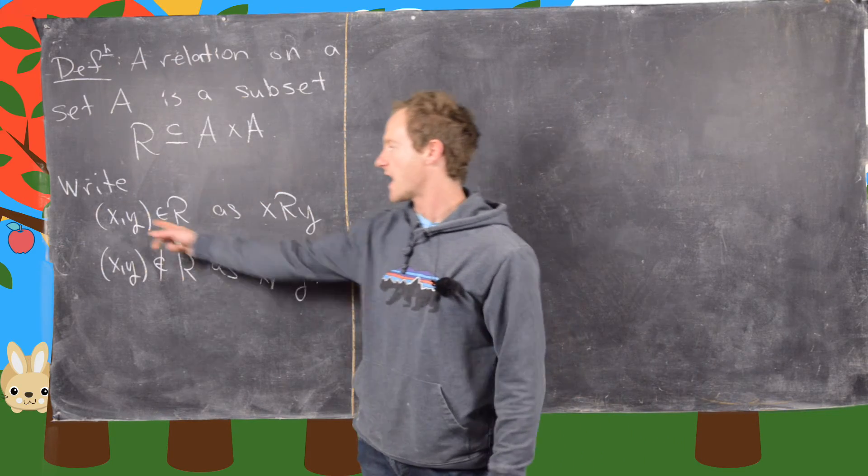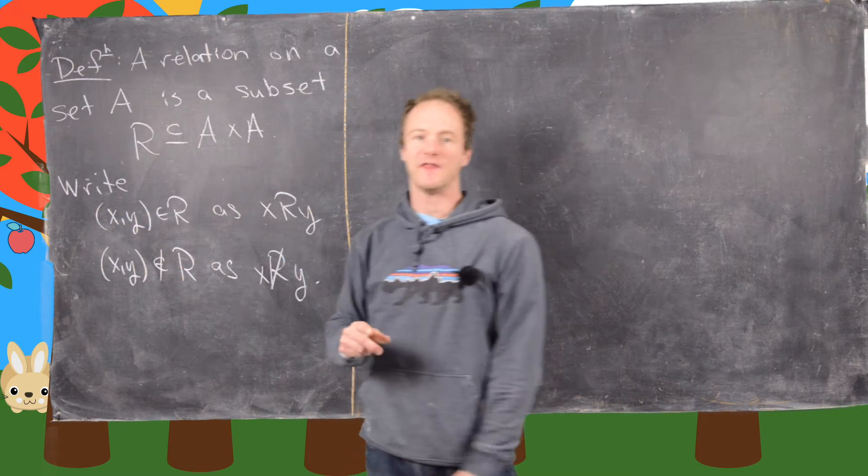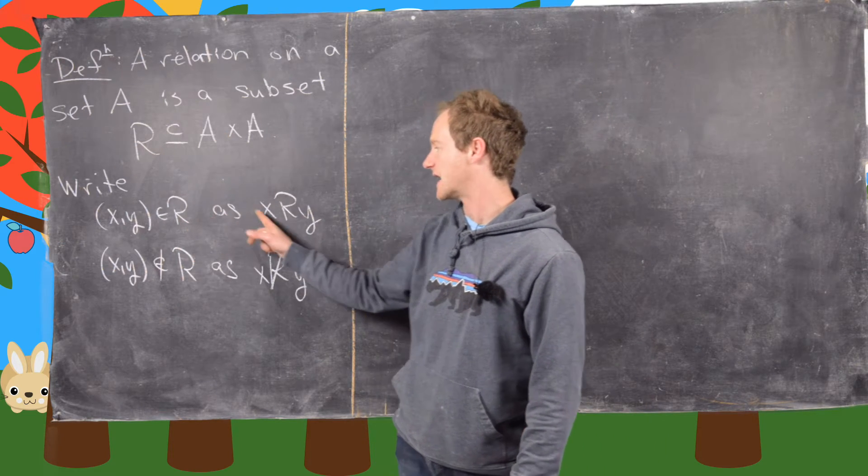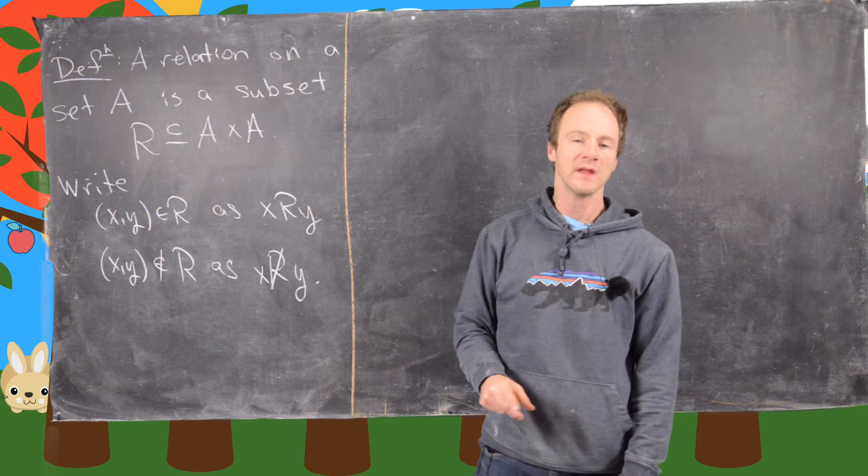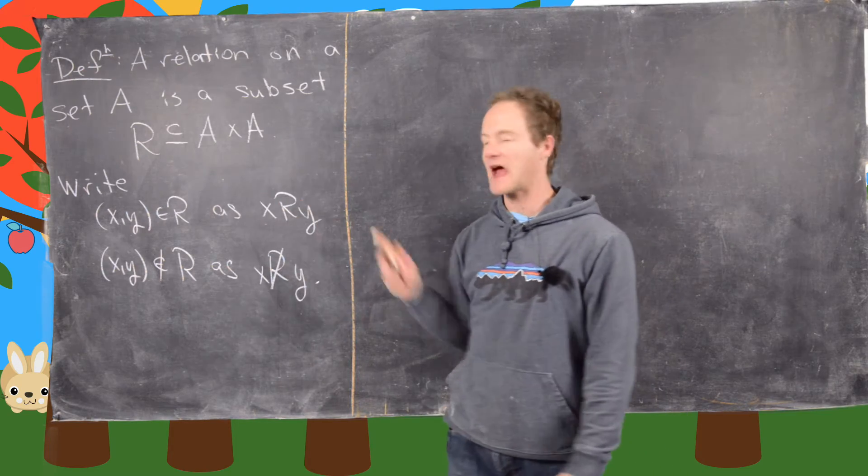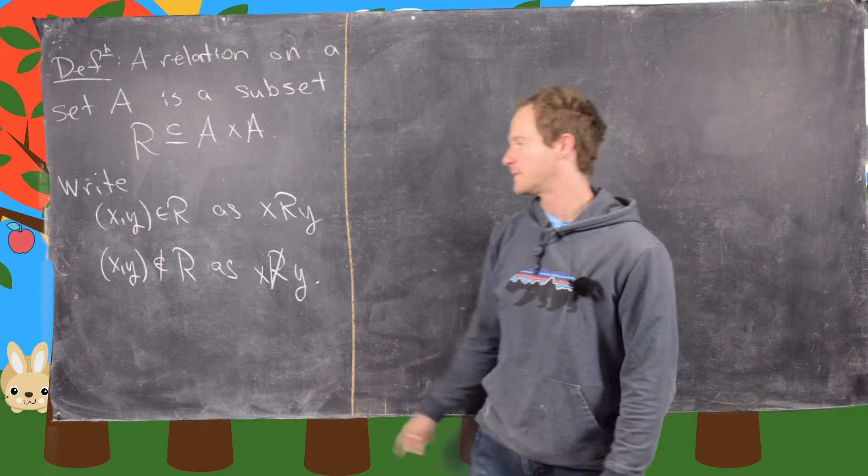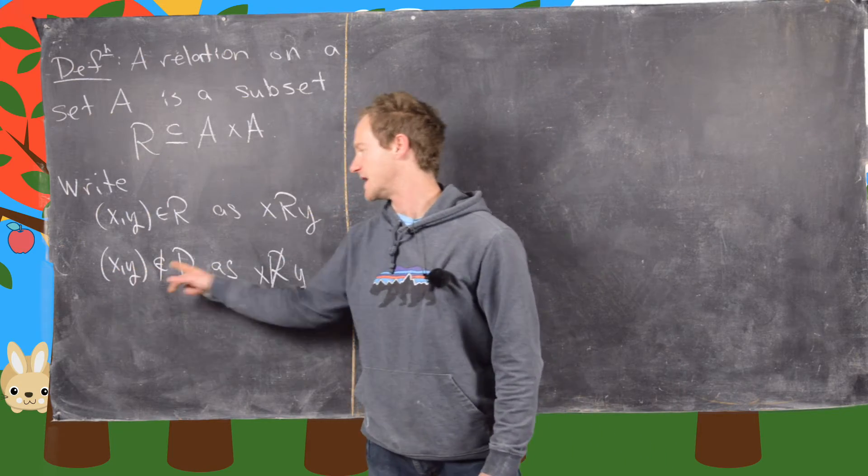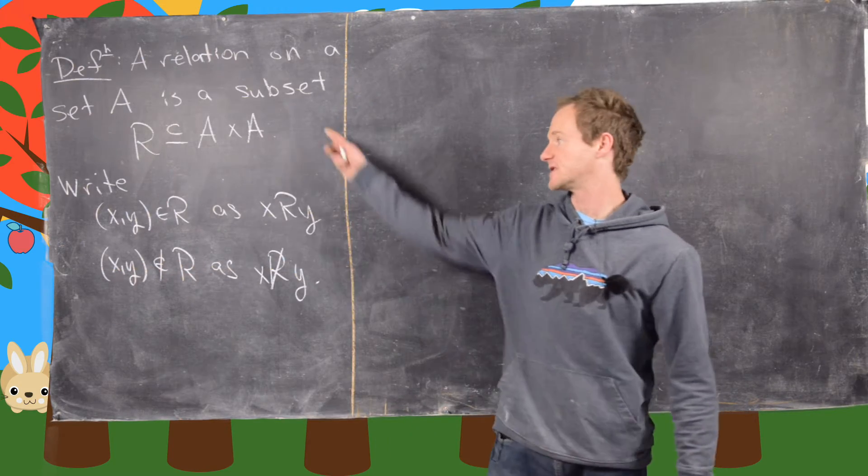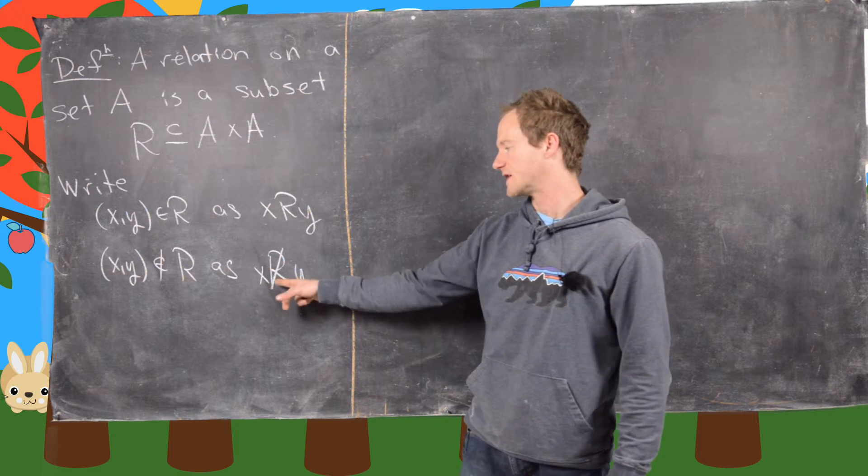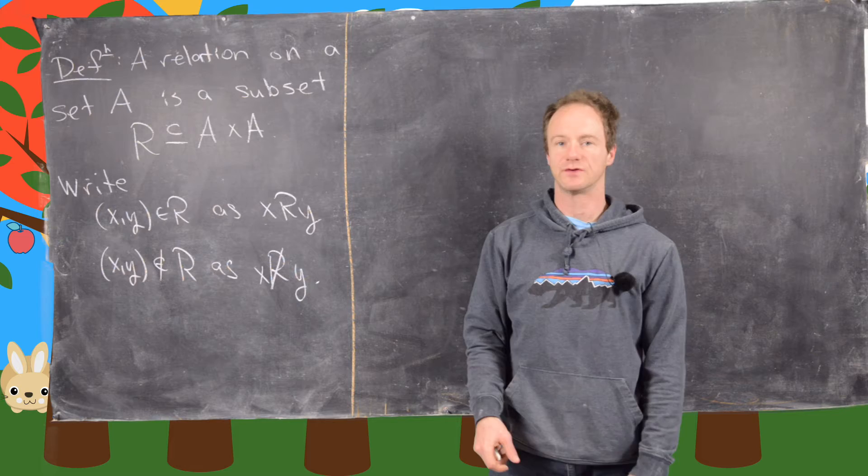And generally we write if X comma Y, that ordered pair, is in that subset of A cross A as X R Y. And here we think this is saying X is related to Y by whatever this relation is. And then if X comma Y is not in this subset, then we write X not related to Y. So in other words, we put a cross through the R.